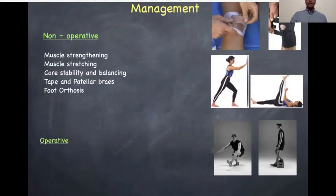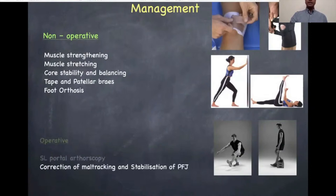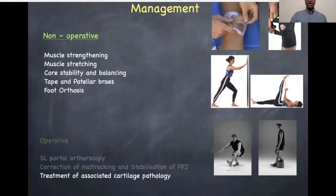When it comes to operative stabilization, the three main principles are: assessment of patellar tracking through supralateral arthroscopy — which is a must — correction of maltracking and stabilization of the patellofemoral joint, and do not forget the treatment of associated cartilage pathology, which is not uncommon, especially with recurrent patellar instability.